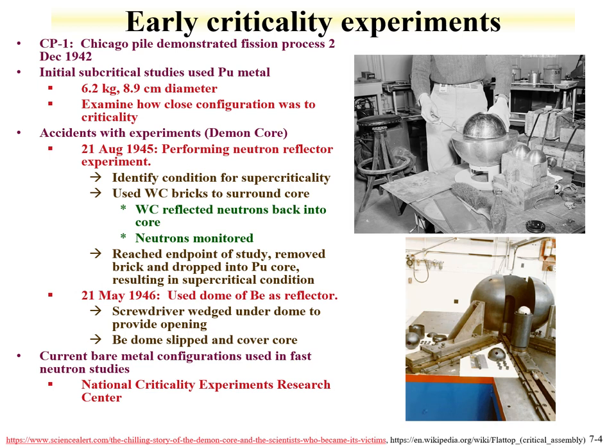With the same core in May 1946, a beryllium dome reflector was slowly lowered over the core. A screwdriver was wedged under the dome to allow neutrons to escape and keep the system subcritical. When the screwdriver slipped, the gap disappeared, a supercritical condition was reached again, resulting in fatal doses. For this reason, criticality experiments have been under high control, and what was done in the 1940s is certainly not continued today.